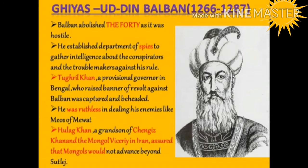After Razia, three weak rulers in succession ascended the throne, after whom came Giyasuddin Balban, who ruled from 1266 to 1287. Balban abolished the Turkan-i-Chahalgani — the group of Forty — as it was a threat to his authority. He established a Department of Intelligence to gather information about conspirators and troublemakers against his rule.